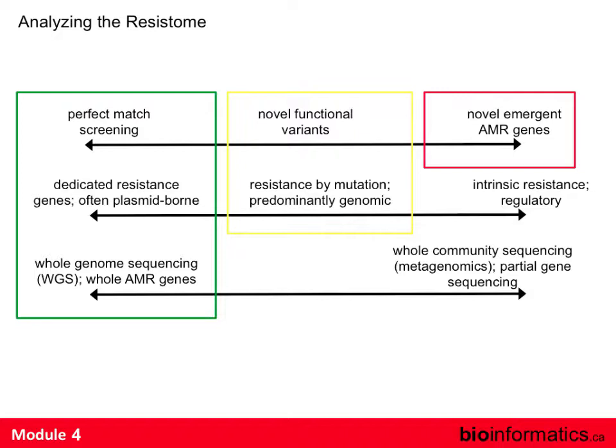Novel emergent resistance is the only one CARD is really building algorithms for — trying to say 'I can't explain the resistance I see, what could be emerging?' We are not doing well on regulatory and intrinsic resistance. A master's student is working on efflux because regulation is complex and we do not predict efflux well. Metagenomics works well for dedicated genes with high similarity — but completely ignores mutational resistance, which is why it's useless for TB.